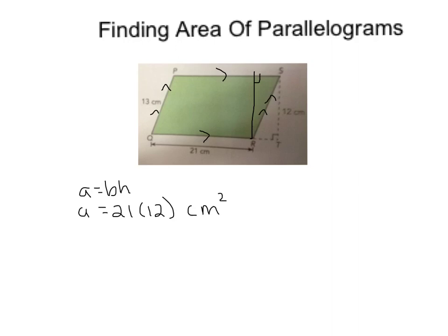Your base is the base, which doesn't matter if that's from QR or from PS. Your base, 21 centimeters, is going to be the same, because remember, these lines are congruent. So our area is going to be 21 times 12 centimeters squared. Whenever you're talking about area, it needs to be in centimeters squared. So the area of this parallelogram must be 252 centimeters squared, or you can say 252 square centimeters.